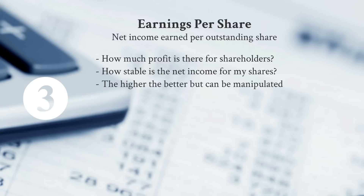Number three on our list is Earnings Per Share — a key indicator for investors. It's net income divided by the number of shares outstanding, showing how much profit is available per share. Looking at the history of EPS reveals how stable net income is for a prospective investment. The higher the number, the better — but there can be accounting manipulations that obscure the true picture.